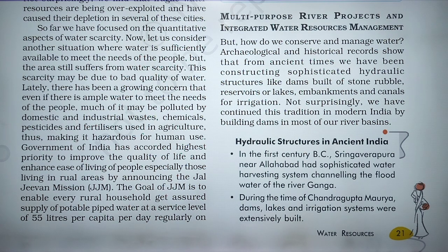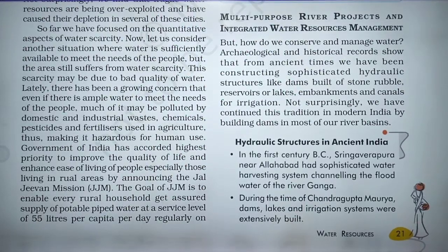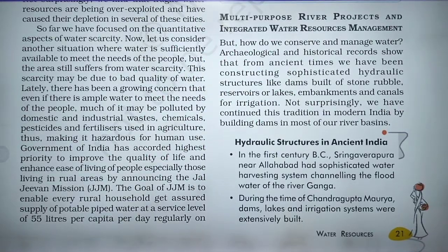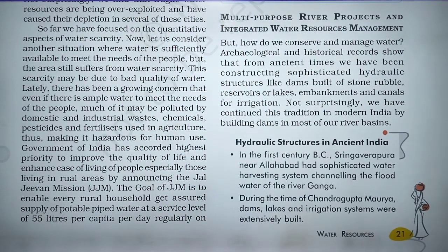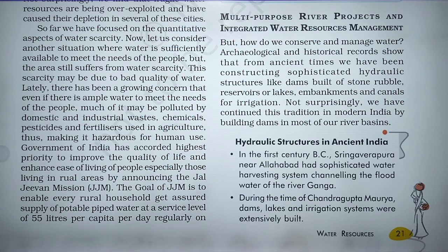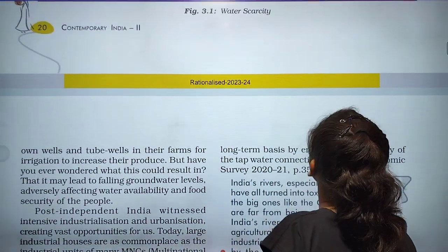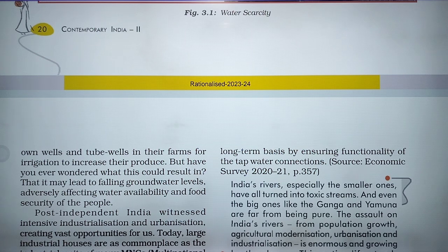The Government of India has accorded highest priority to improve the quality of life and enhance ease of living of people, especially those living in rural areas, by announcing the Jal Jeevan Mission. The goal of the Jal Jeevan Mission is to enable every rural household to get an assured supply of potable piped water at a service level of 55 litres per person per day on a long-term basis by ensuring functionality of tap water connections.